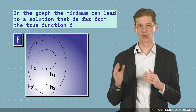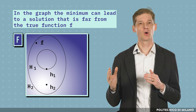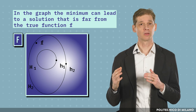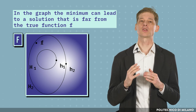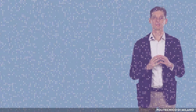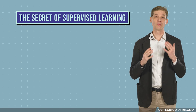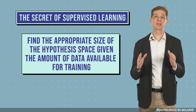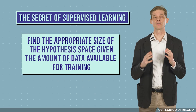In fact, as shown in the graph, the minimum of the empirical loss function can lead to a solution that is far from the true function f. The main secret of supervised learning is to find the appropriate size of the hypothesis space given the amount of data available for training.